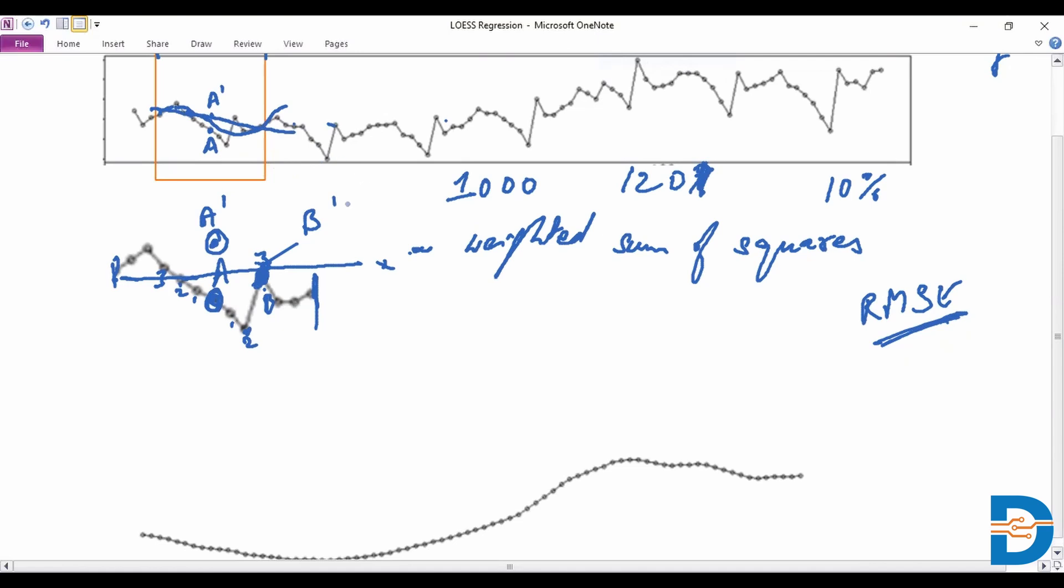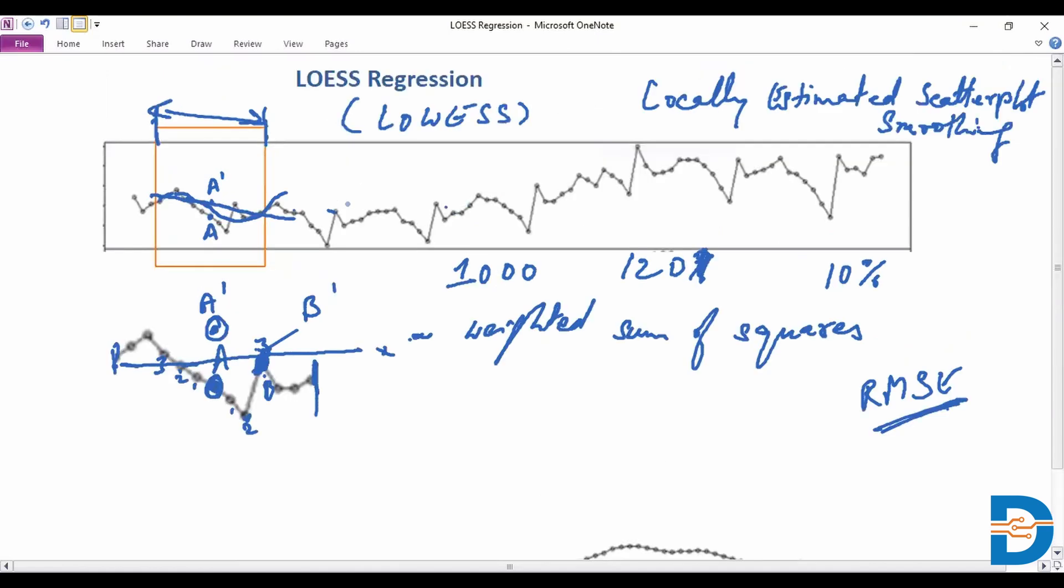We'll be moving the window as we look for the closest n number of points. We took 12 in this case, the closest n number of points that you have for each and every observation. And we have a prediction line accordingly for that local region for that given point.